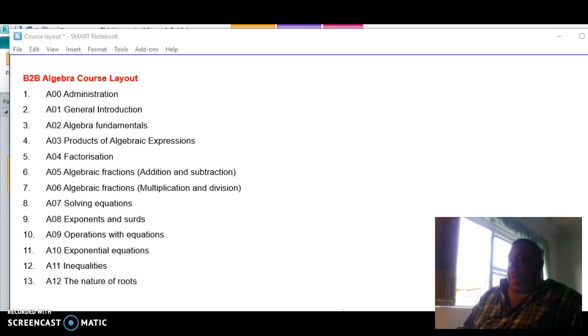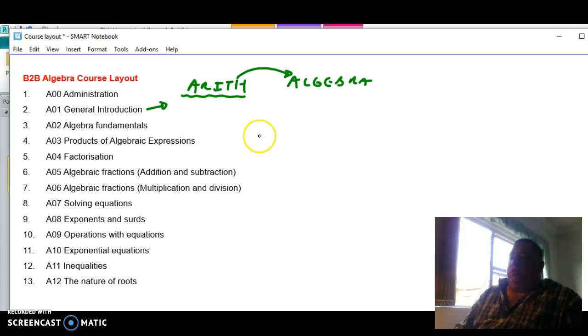The course layout for this basic algebra course is as follows. First of all we've got a general introduction. At this general introduction we are looking mainly at the links between arithmetic and algebra. Although we are not making the links immediately, we are studying the arithmetic to ultimately link that to the algebra.